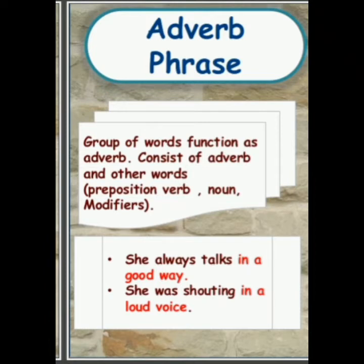Let's have a look at the adverb phrase. An adverb phrase consists of a preposition plus nouns, verbs, and modifiers. They perform the work of an adverb in a sentence. For example, "she always talks in a good way" and "she was shouting in a loud voice."